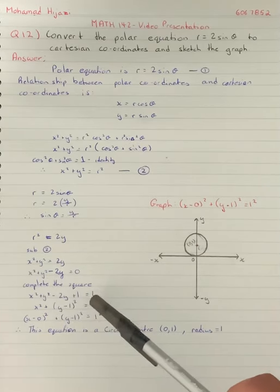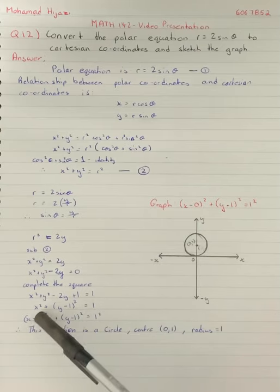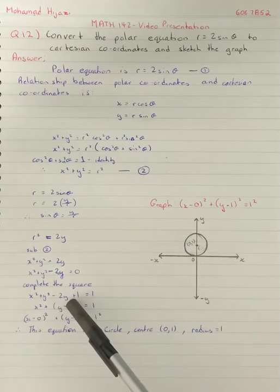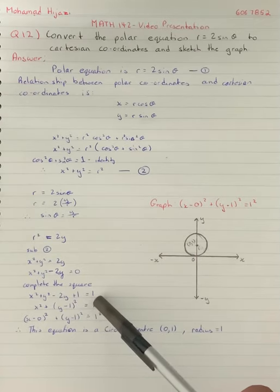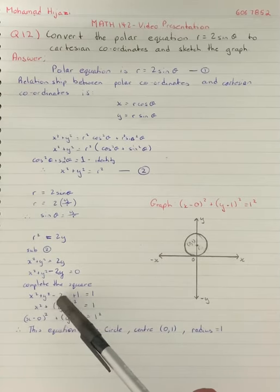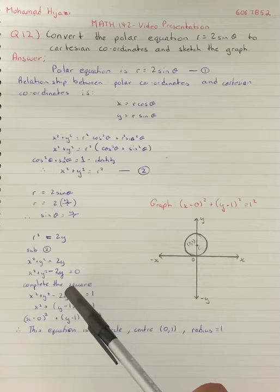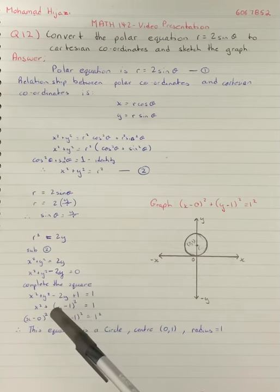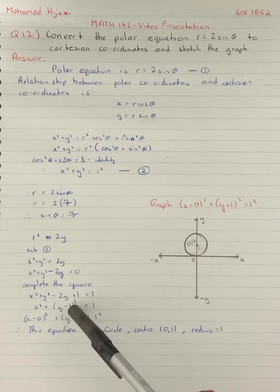To simplify, we use completing the square: x² + y² - 2y + 1 = 1. We can see that y² - 2y + 1 simplifies to (y - 1)².